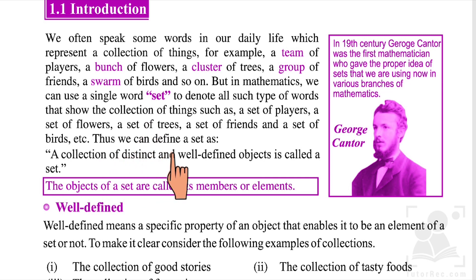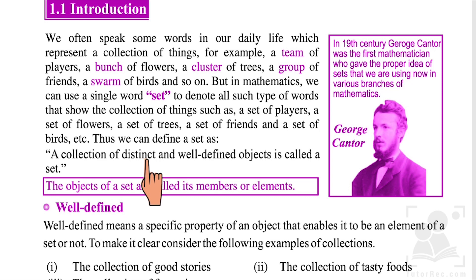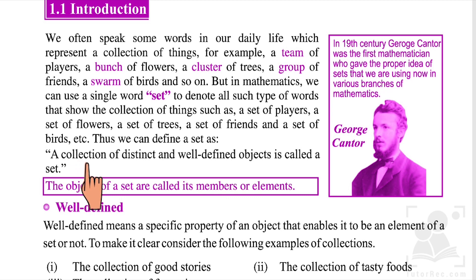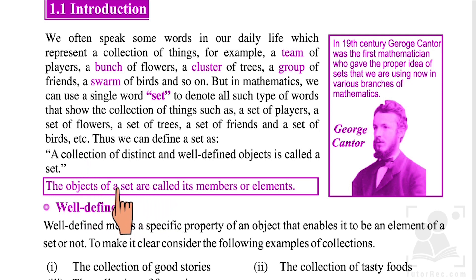The collection of distinct and well-defined objects is called a set. Distinct means specific things, and well-defined means the objects must be clear. So, a collection of specific and well-defined objects is called a set. The objects of a set are called its members or elements — all objects inside a set are its elements or members, and they must be well-defined and clear.